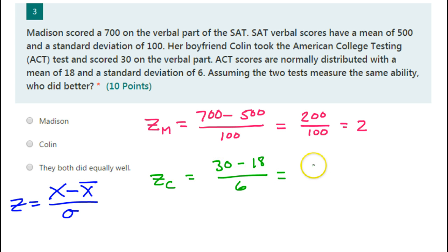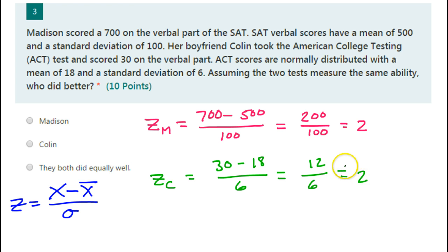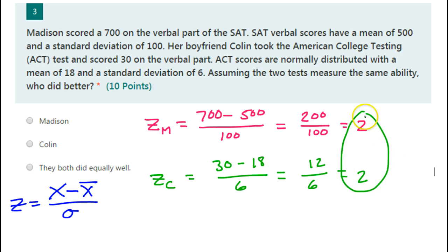30 minus 18 is 12. 12 divided by 6 is 2. So both of these scores translate into a z-score of 2, which means they both did equally well.